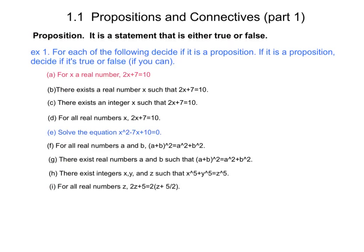And if we instead replaced A by x equals 3 halves and 2x plus 7 equals 10, it would also become a proposition and it would be a true proposition.